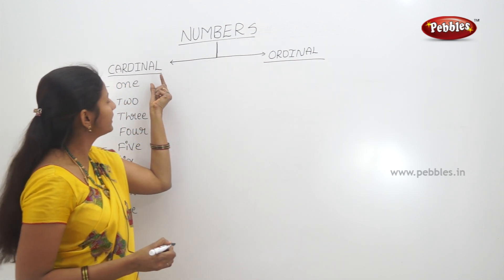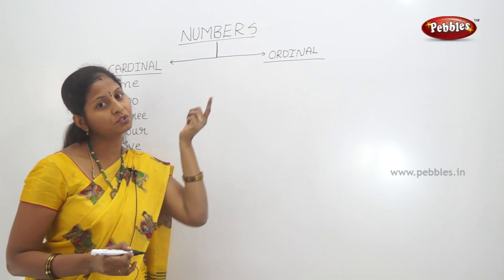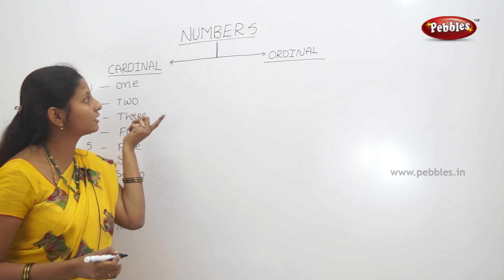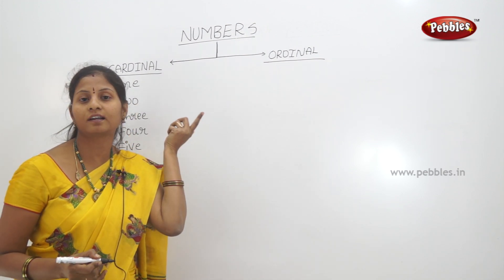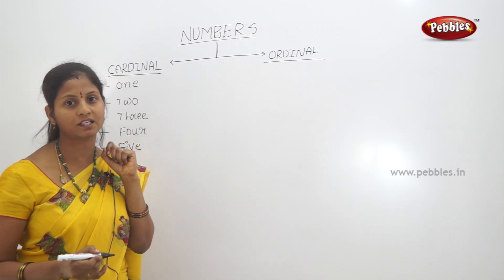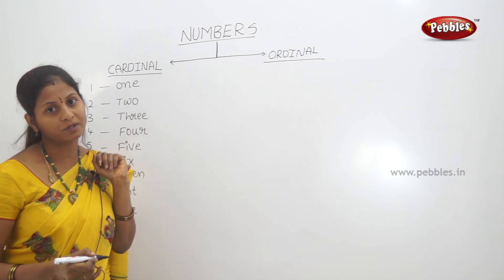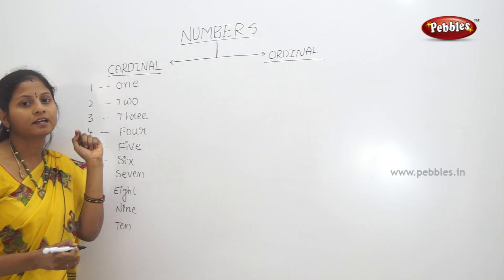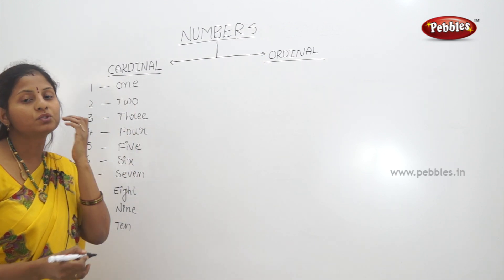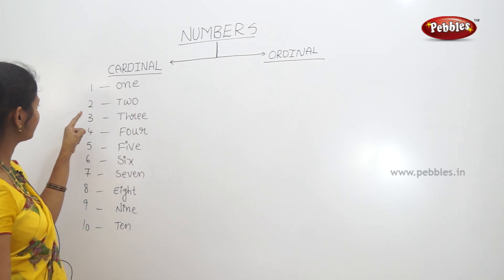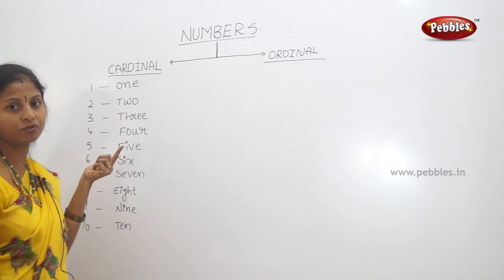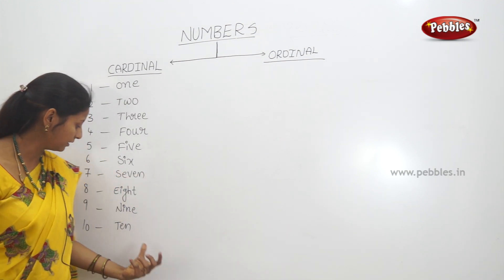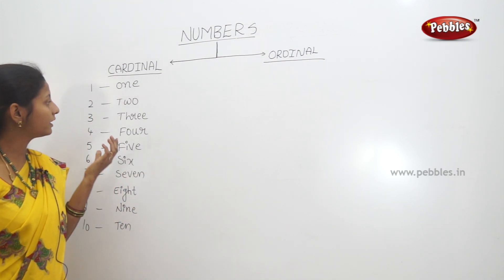So, numbers are of two types: cardinal and ordinal numbers. We will use a lot of numbers. 1, 2, 3, 4, 5, 6, 7, 8, 9, 10.